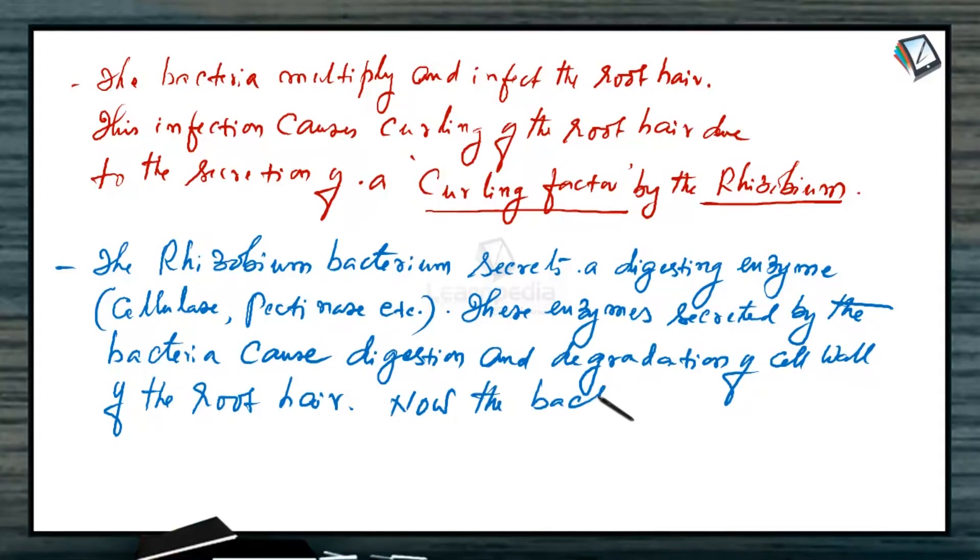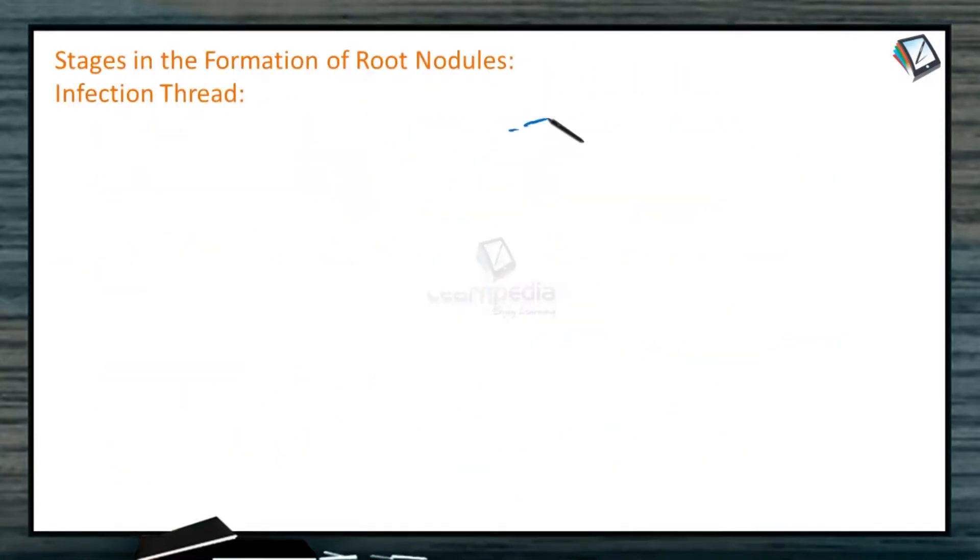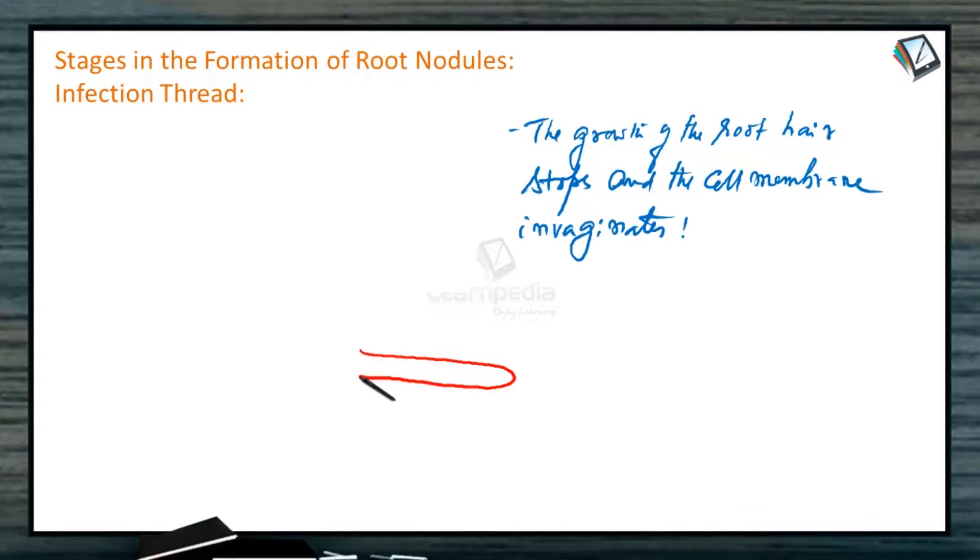These enzymes secreted by the bacteria cause digestion and degradation of cell wall of the root hair. Now the bacteria are in contact with the cell membrane of the root hair. Now the growth of the root hair stops and the cell membrane invaginates. This is the root hair. Cell wall is digested. These are the bacteria.